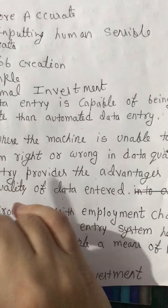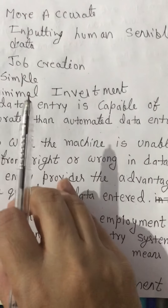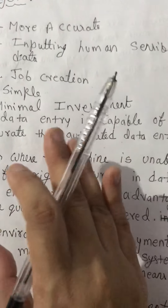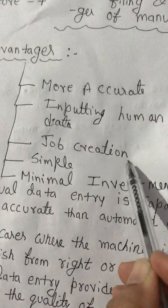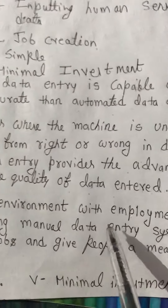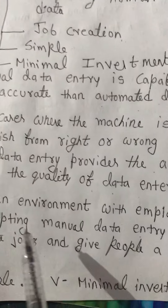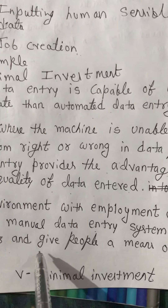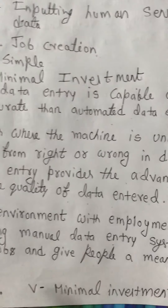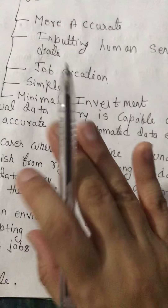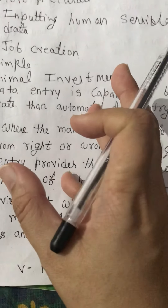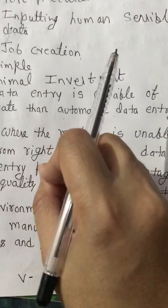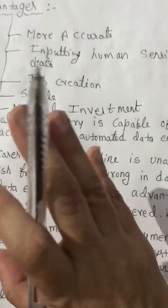For example, when a project detail is being captured manually, it is possible to have high quality products selected. Third is job creation. In an environment with employment challenges, adopting a manual data entry system helps to create jobs and give people a means of livelihood. Manual data entry provides more benefits to people and government in job creation, with more jobs created through manual data entry services.